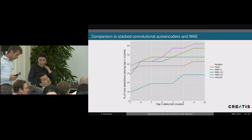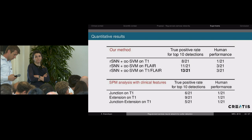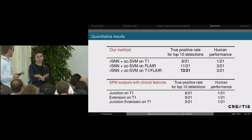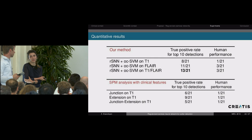Question: With 18 MR-negative patients, how can you determine the ground truth? The ground truth is established because all these patients were operated on — part of the brain was removed and they were seizure-free afterwards, providing medical evidence that there was an epilepsy lesion in that zone. We take the post-operative scans and delineate the zone with experts. That is how we obtained the ground truth.